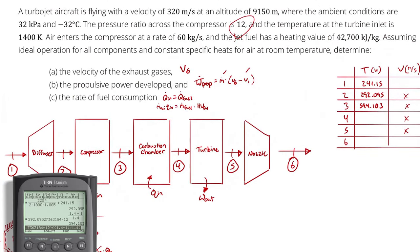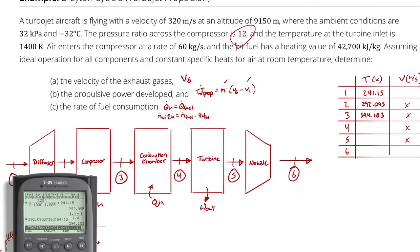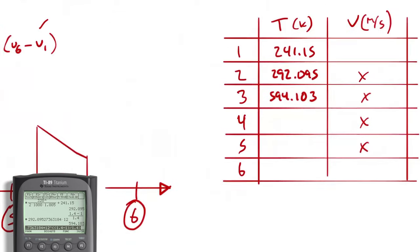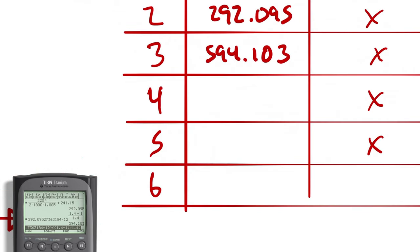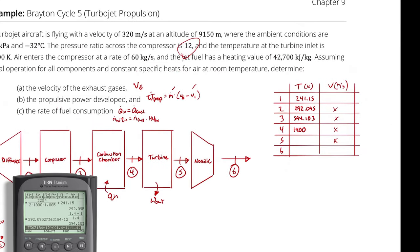How do we get from state 3 to state 4? We don't need to — we already have T4. It's 1,400 Kelvin, as given in the problem.